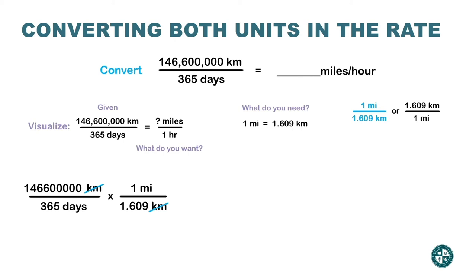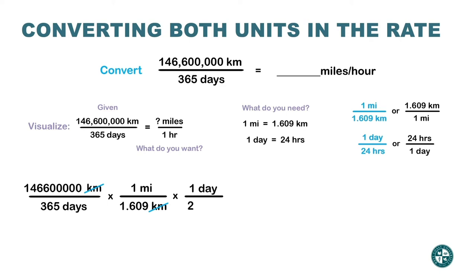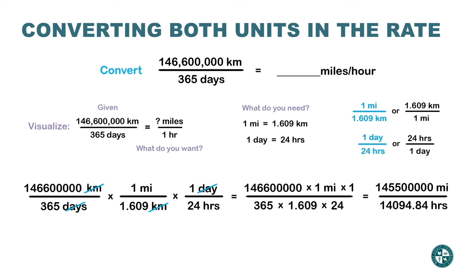The answer I want has hours on the bottom, so I need to cancel the word 'days.' I'll multiply by another fraction. I need to know how many hours are in a day — one day has 24 hours. From that conversion statement I get two fractions. Because 'days' is on the bottom, I choose the fraction that has 'day' on the top so it cancels out. Now on the top I have miles, and on the bottom I have hours — exactly what I wanted.